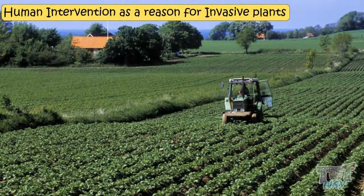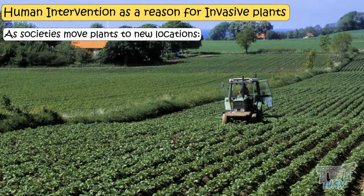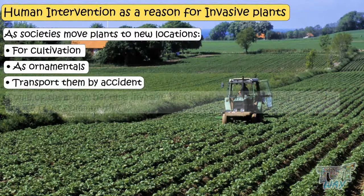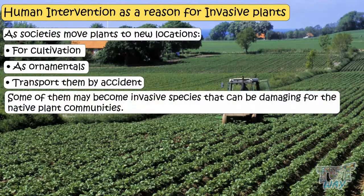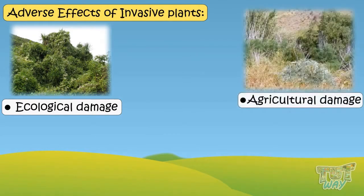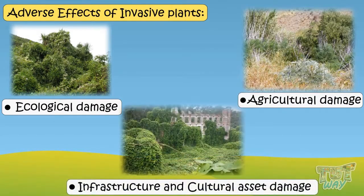As societies move plants to new locations for cultivation as crops or ornamentals, or transport them by accident, some may become invasive species that can damage native plant communities. Besides ecological damage, these species can also damage agriculture, infrastructure, and cultural assets of the environment.